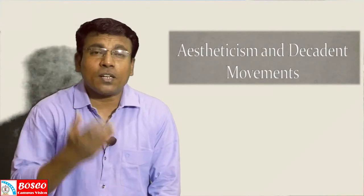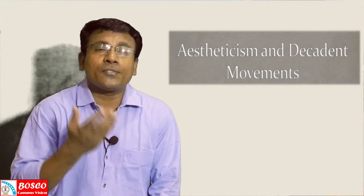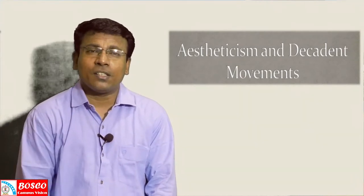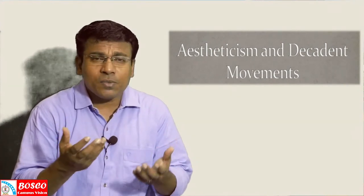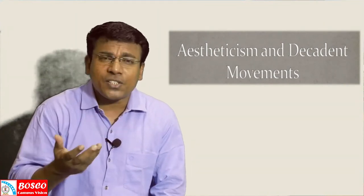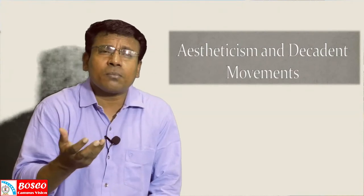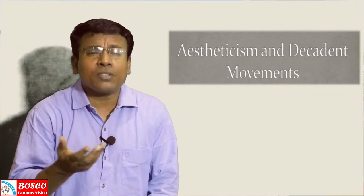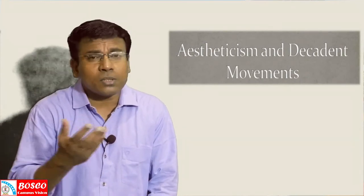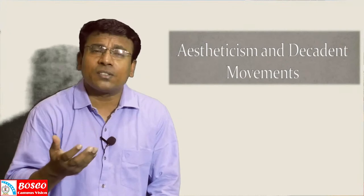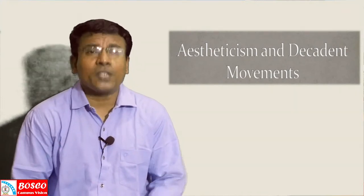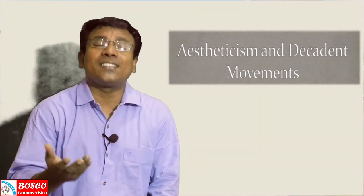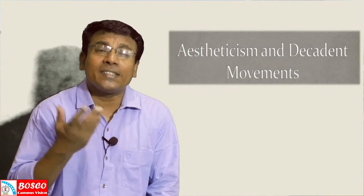Welcome dear students to the last topic of the first unit of our syllabus, the history of English language and literature. In the previous class we discussed about the Pre-Raphaelites, and prior to that, Victorian poetry and important poets like Alfred Lord Tennyson, Robert Browning, and Matthew Arnold. Today we shall discuss about the Aestheticians or the Decadence.